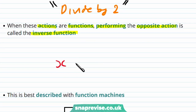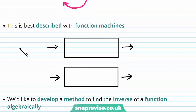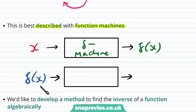Let's say we had x being mapped to y by the function f. Then the function which sends y back to x would be called the inverse function. This is best described with function machines. Let's say we had x going into the f machine — out comes f of x. Now let's suppose we send f of x into the f inverse machine; what we hope to get out is x again.